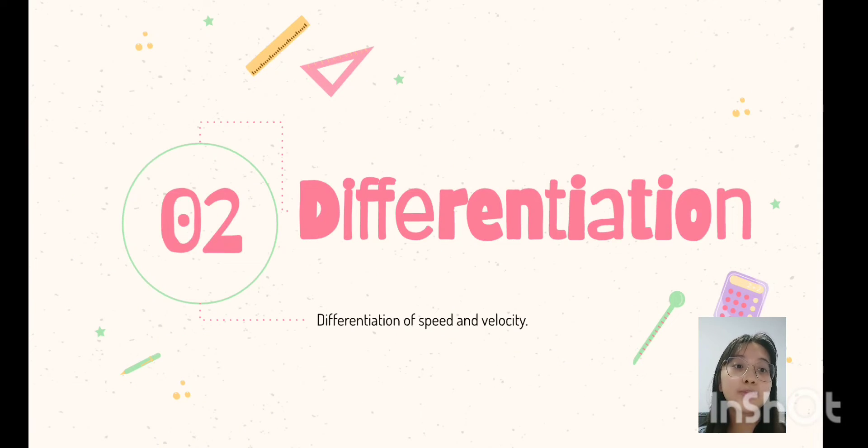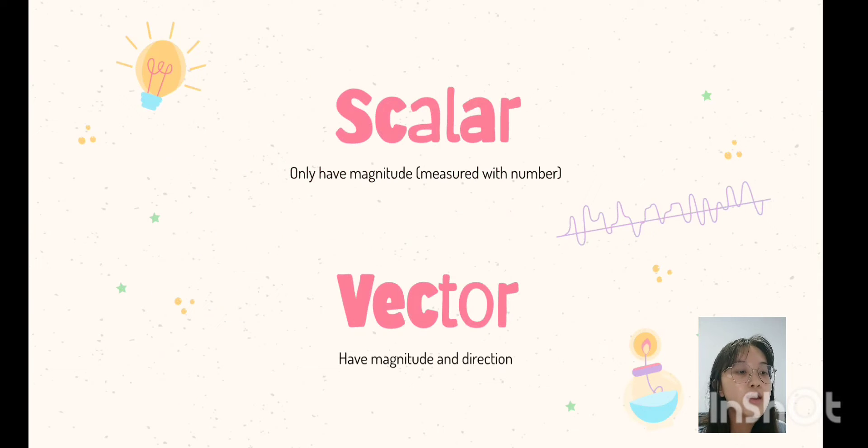So, what is the difference of speed and velocity? Before I explain the differentiation of speed and velocity, I think I should explain about scalar and vector quantities. Scalar quantities are physical quantities that only have magnitude that can be measured with numbers, while vector quantities are physical quantities that have magnitude and also direction.